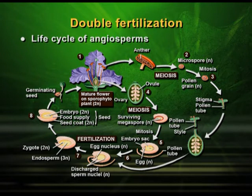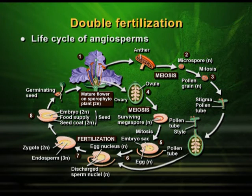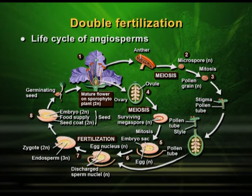Once fertilization takes place, the zygote is formed — that is again 2N. The developing embryo will also be 2N. It has embryo, food supply, and seed coat. When this seed germinates, it produces the mature plant again. So you can see the life cycle of the angiosperm: it started with 2N, became single N through meiosis, and then became double N again through fertilization.